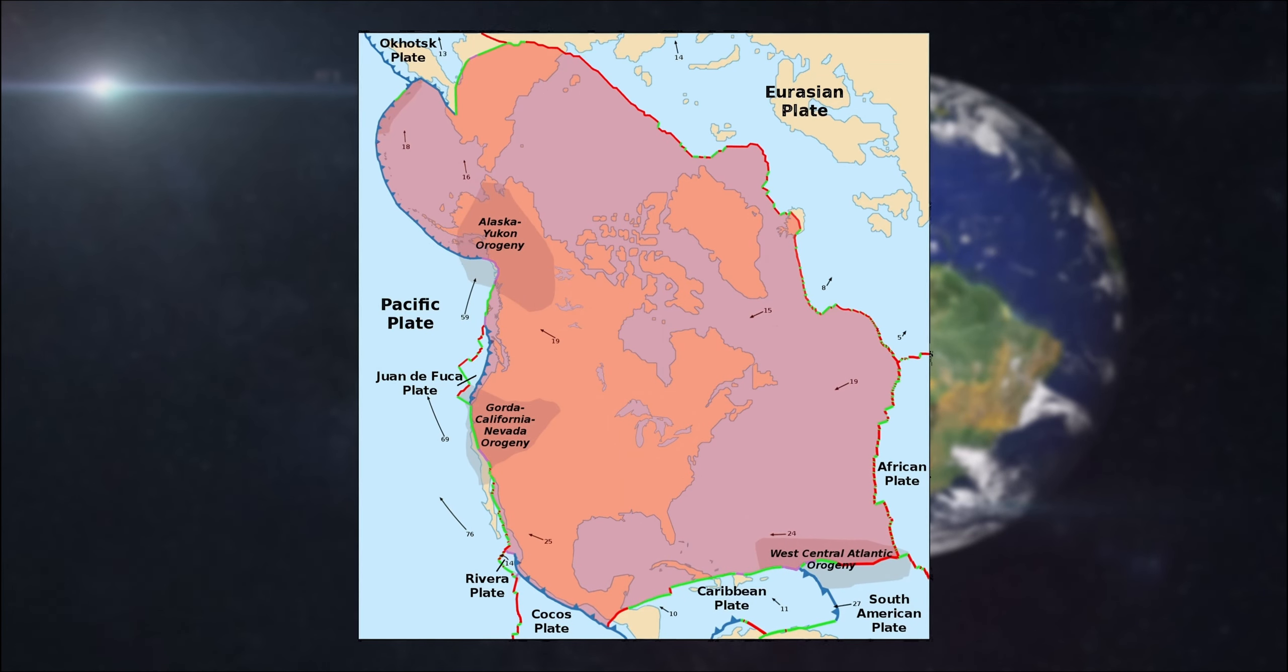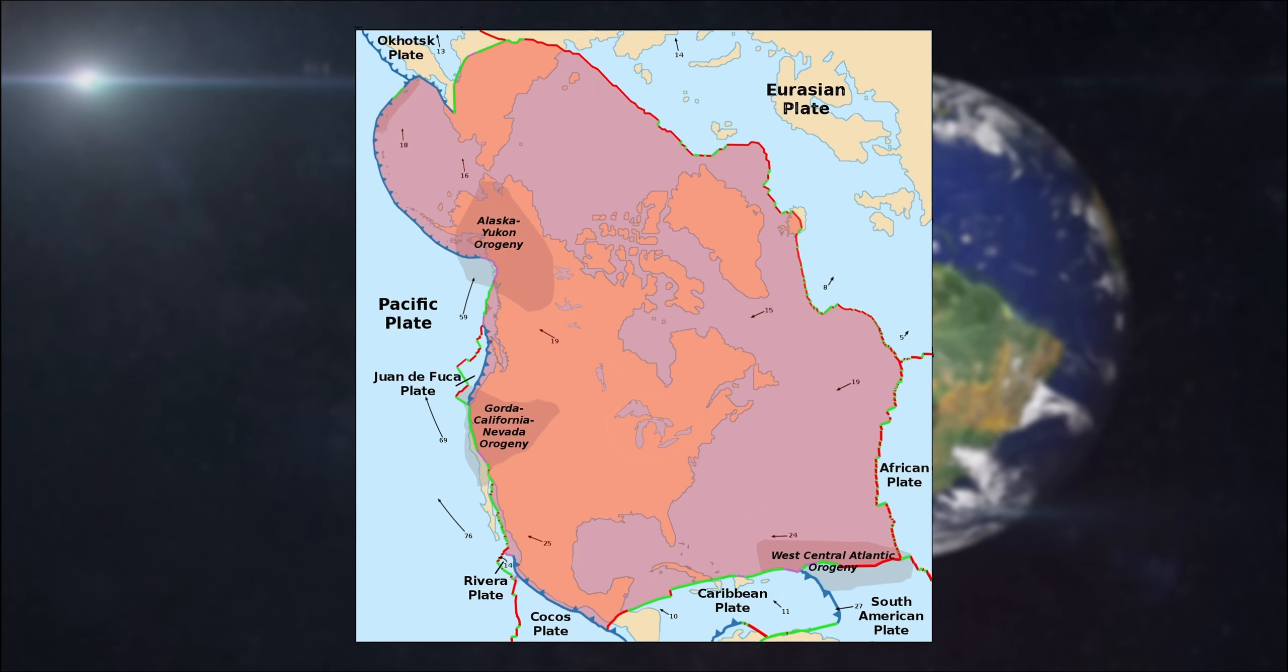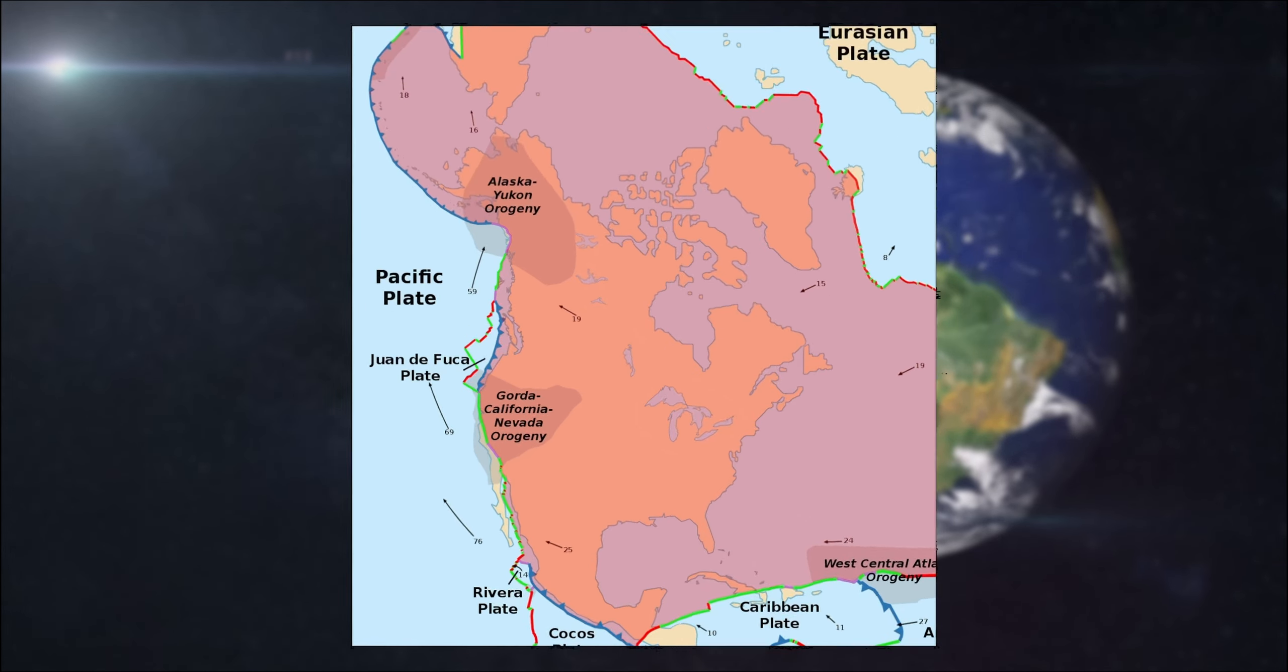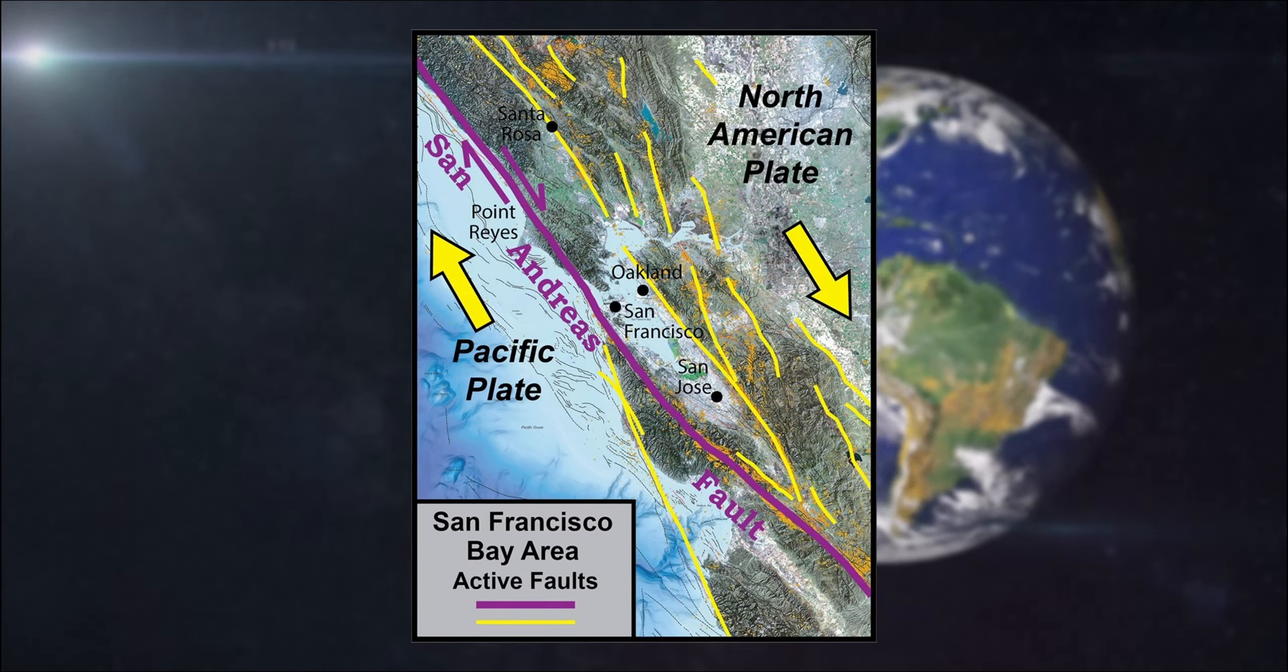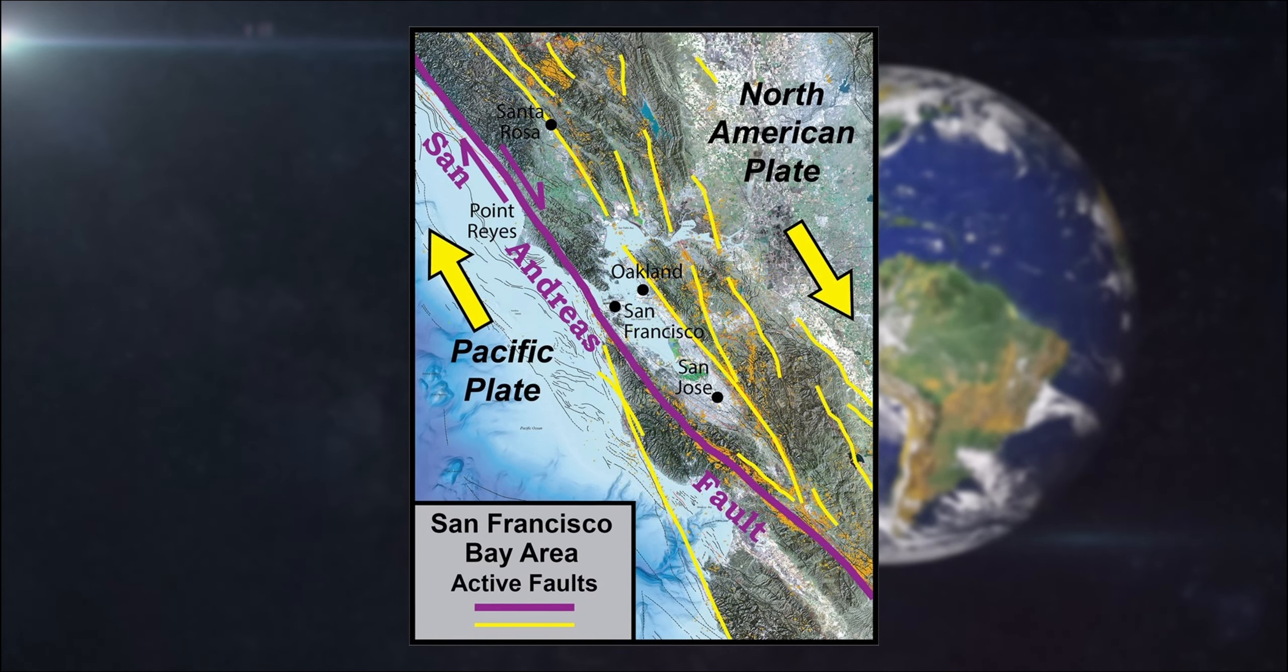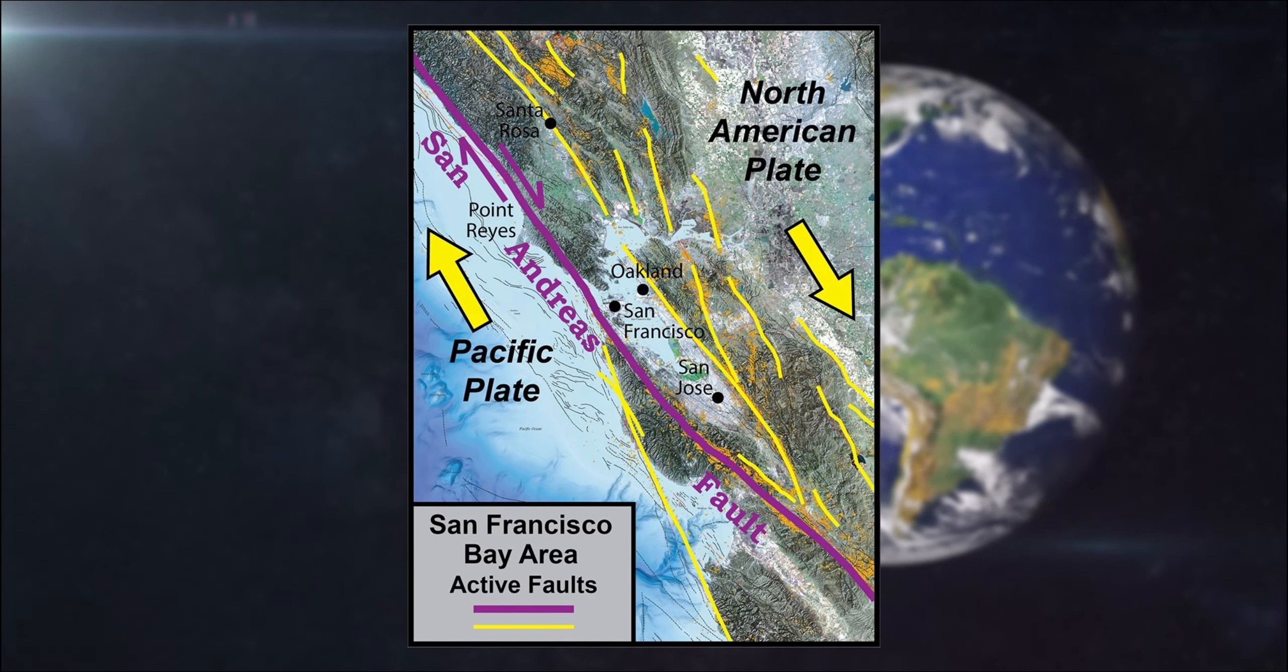Similar changes will continue in 50 million years, affecting America. In general, this country is located on the North American Plate. But one part of it is located on the Pacific Plate. This is California. And they are moving towards each other. As a result, California can, figuratively speaking, dock with San Francisco. Or, on the contrary, slightly move away from it, and the bay will turn into a full-fledged sea.